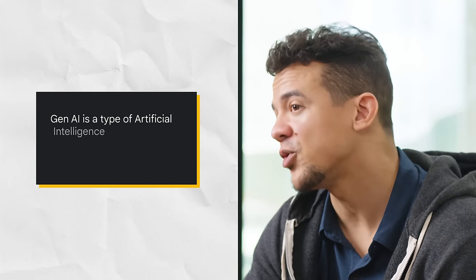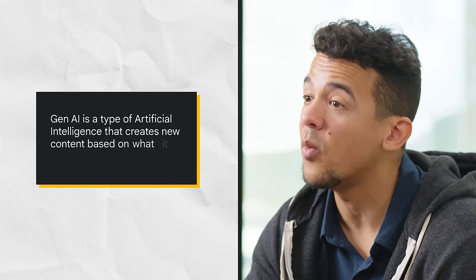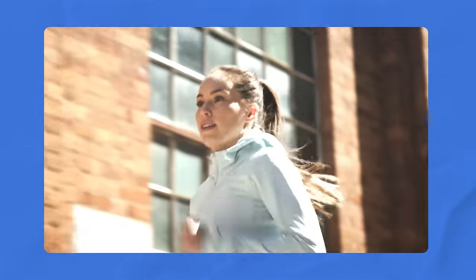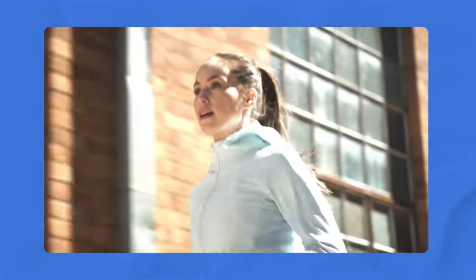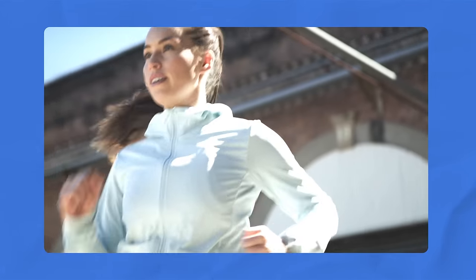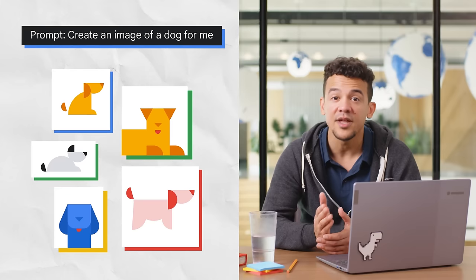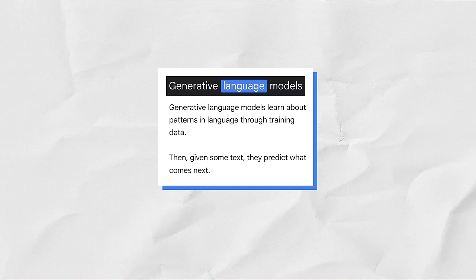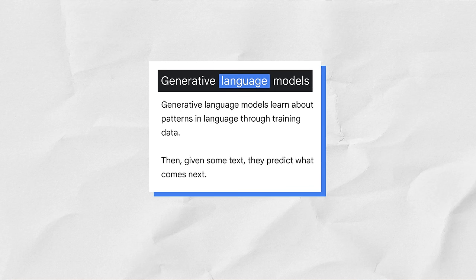Now let's make things a little more formal with an official definition. What is generative AI? Gen AI is a type of artificial intelligence that creates new content based on what it has learned from existing content. The process of learning from existing content is called training, and results in the creation of a statistical model. When given a prompt, Gen AI uses a statistical model to predict what an expected response might be, and this generates new content. It learns the underlying structure of the data and can then generate new samples that are similar to the data it was trained on. A generative language model can take what AI has learned from examples it's been shown and create something entirely new based on that information. That's why we use the word generative.